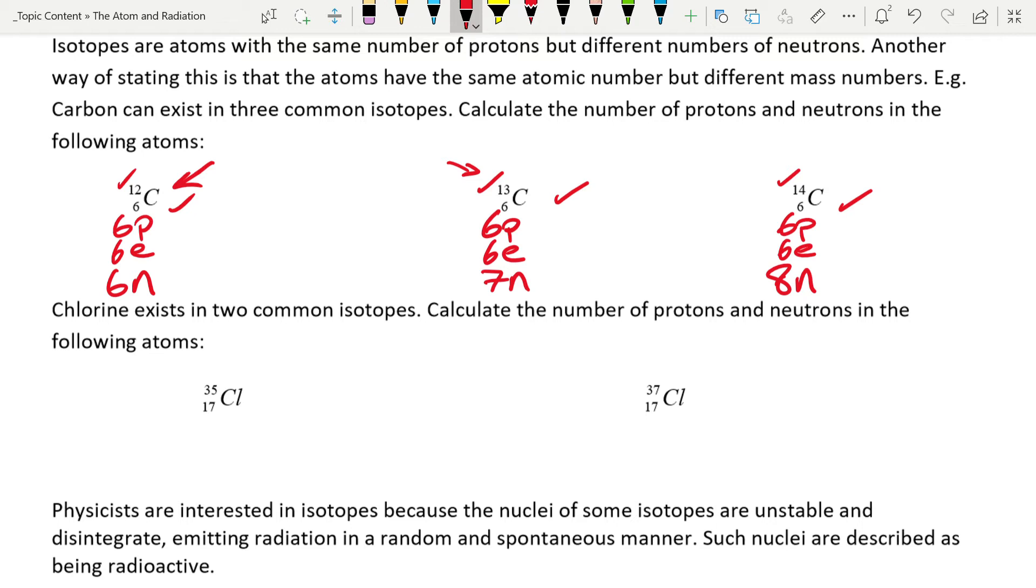Another example down here is chlorine. You can have a little go yourself, trying to work out the number of protons, electrons, and neutrons for each of those. In chemistry, the only difference between them isn't how they react—it's the mass of the products that it forms. The reason we're interested in isotopes in physics is really nuclei.